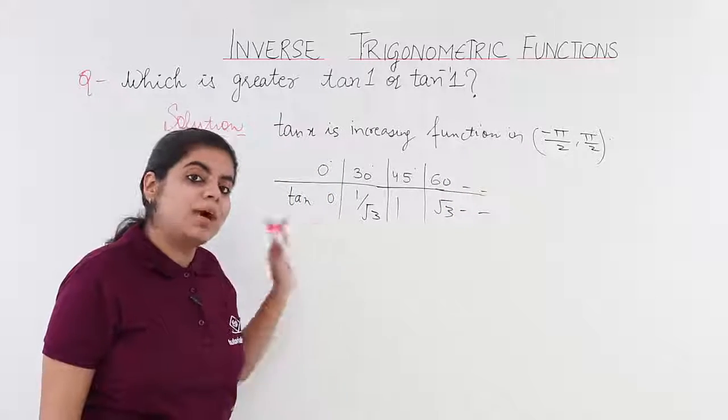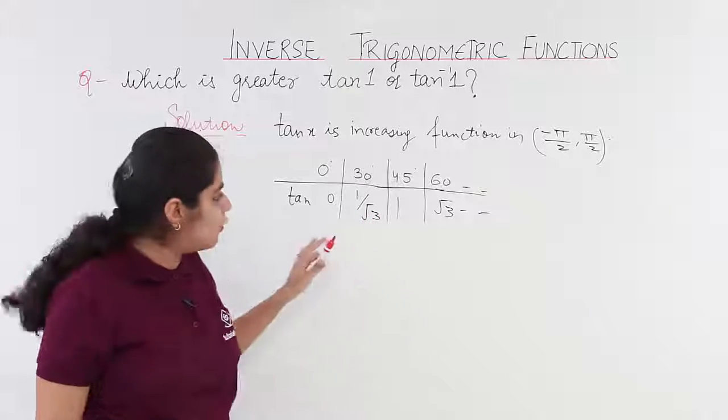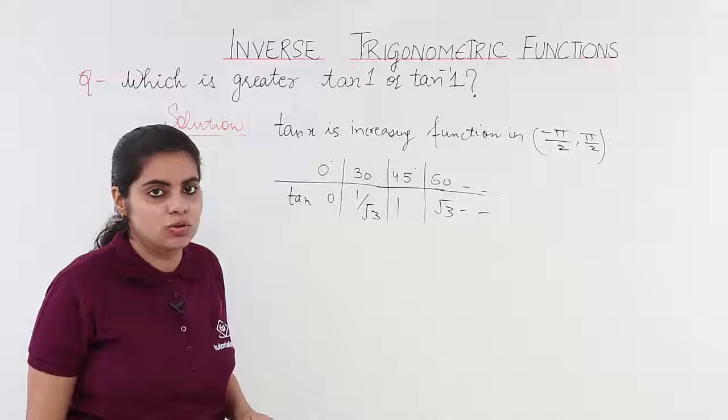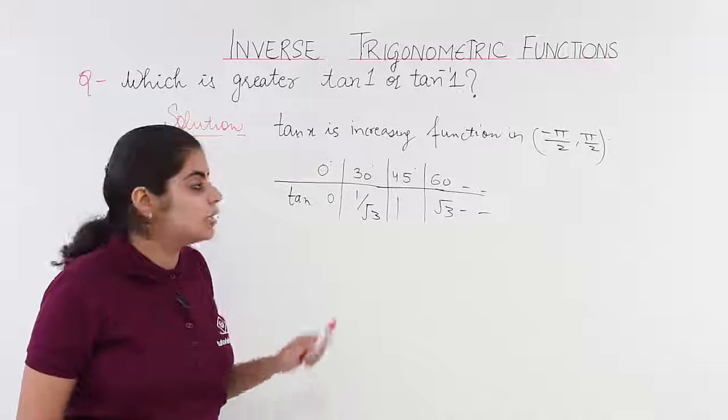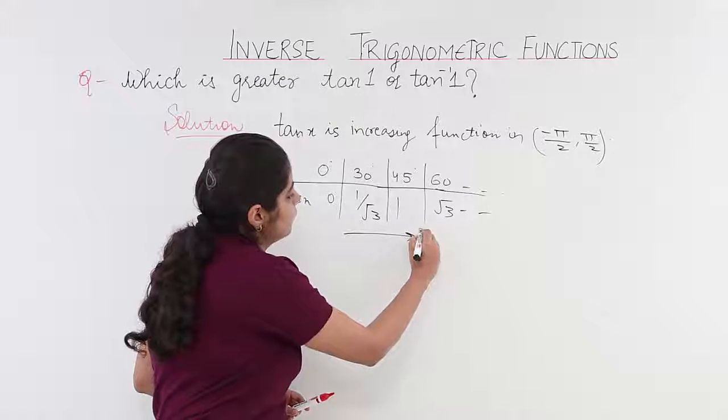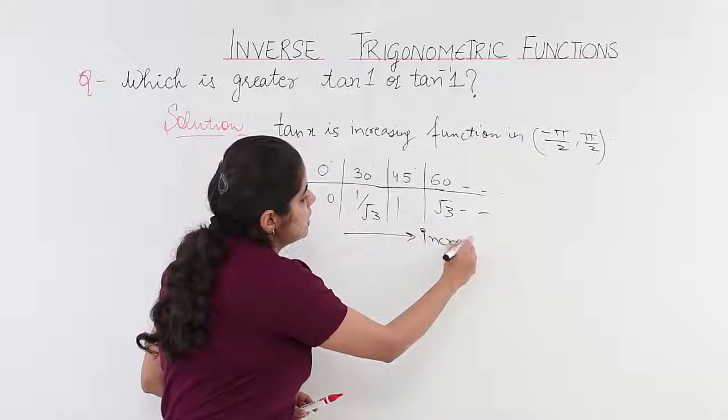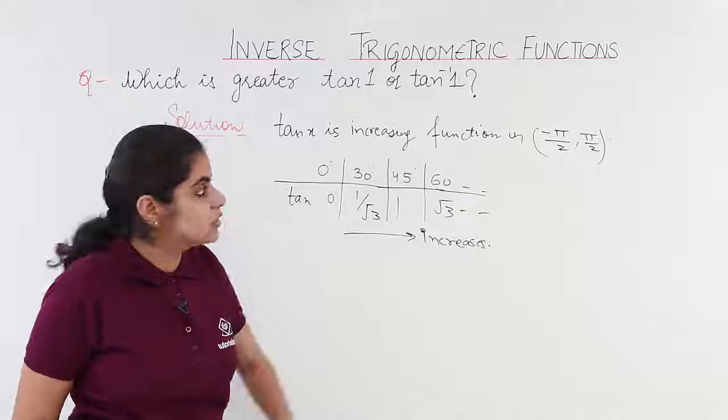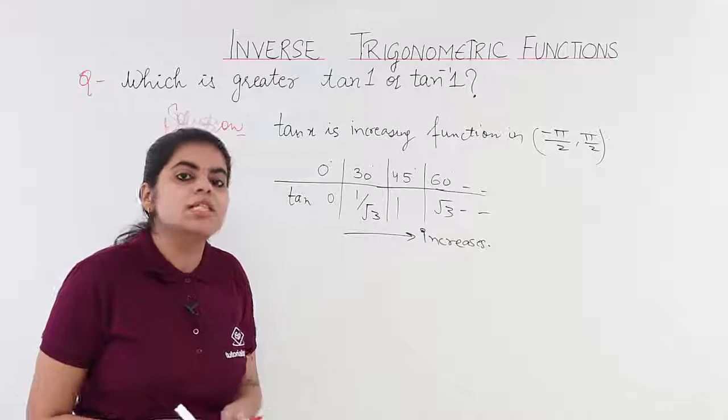So, from minus pi by 2 to pi by 2, we have already taken only the positive axis for our convenience. Otherwise, also, when you draw the graph, you know that the value always increases in the interval of that which I mentioned.